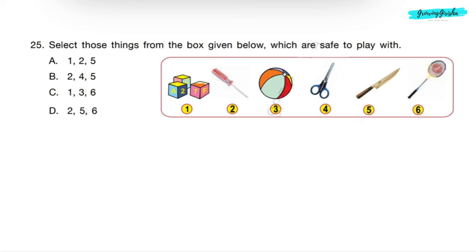Question 25: Select those things from the box given below which are safe to play with. Let us see the things in the box. Figure 1 shows blocks, Figure 3 shows ball, Figure 6 shows badminton. These things are safe to play with. So option C: 1, 3 and 6 will be the correct answer. All the remaining things - screwdriver, scissor, and knife - are not safe to play with. So correct answer will be option C.